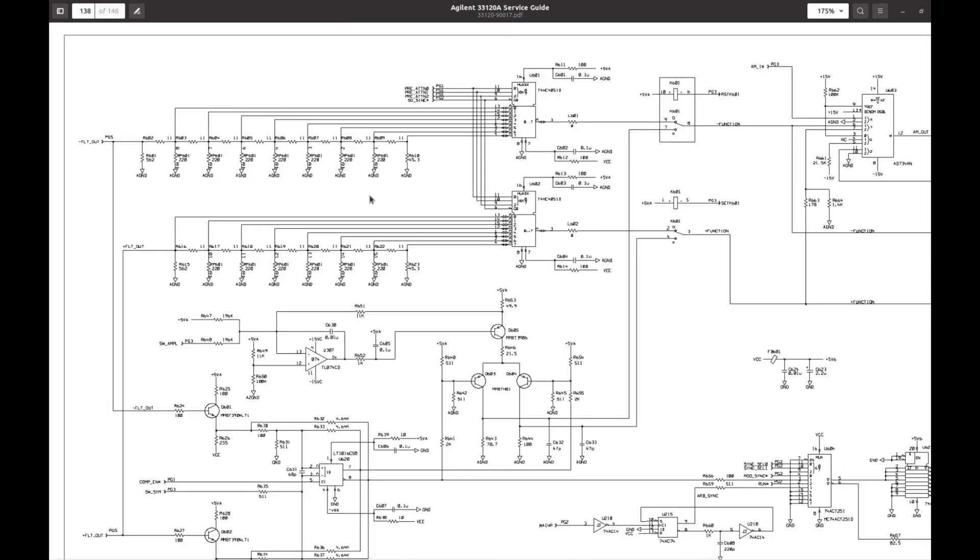And here is the schematic. This is the differential input, one side and the other side here. There are two absolutely symmetrical paths, and the output is differential as well. So we see these attenuation steps. And these two multiplexers are switching the outputs between these attenuation steps. These are analog multiplexers and they are controlled simultaneously. So we need to start checking around here I suppose.